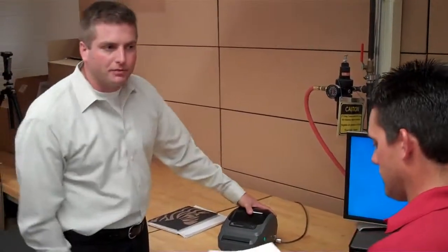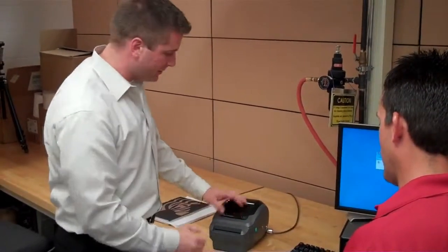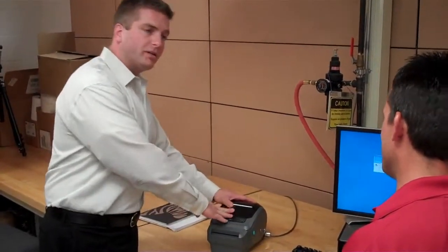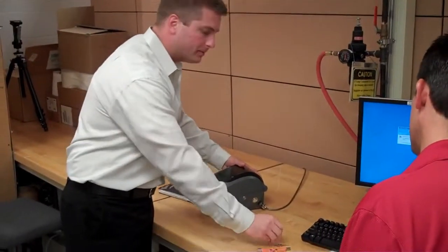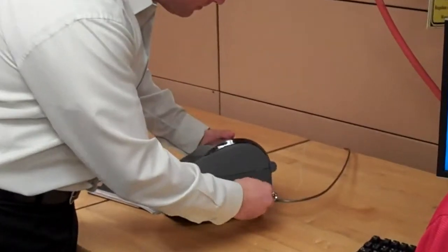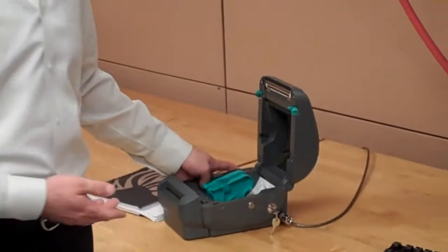They also wanted the printer itself to be secure and not allow people to press the feed button and get blanks out of it. Oh, there are the keys. Break in through the top. They also wanted us to put a lock on the printer. That would secure any media that's inside of the printer.